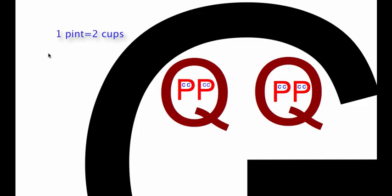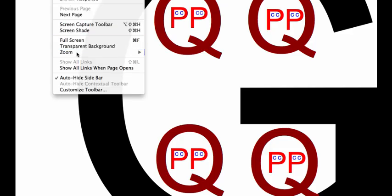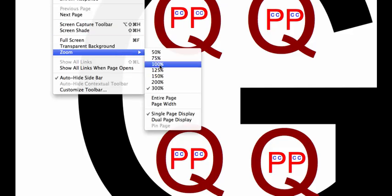So there's two cups in a pint, there's two pints in a quart, and then there's four quarts in a gallon. And this makes up our gallon man. So let's zoom out real quick. And here we go.